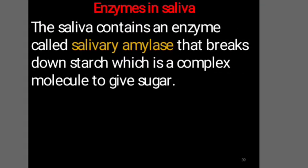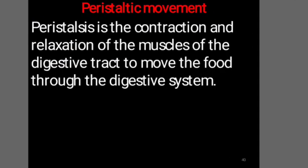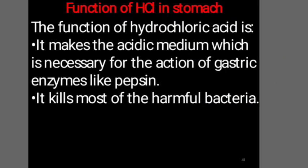Saliva contains an enzyme called salivary amylase that breaks down starch, which is a complex molecule, to give a sugar. After chewing in the mouth, the food is moistened and passed through the food pipe or esophagus, where it undergoes peristaltic movement. Peristalsis is the contraction and relaxation of the muscles of the digestive tract to move the food through the digestive system. After peristaltic movement, the food reaches the stomach, where there are two types of secretions: hydrochloric acid and an enzyme called pepsin.